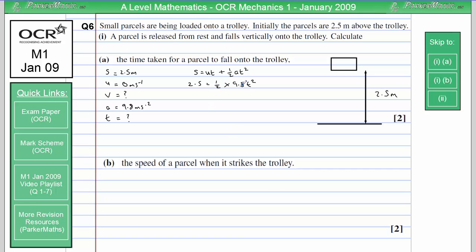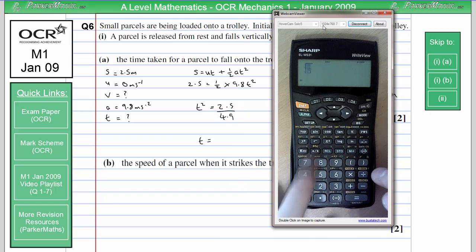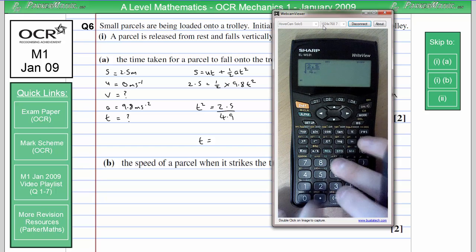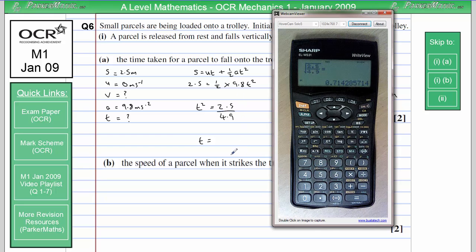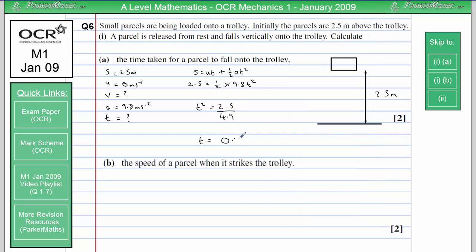Well, a half times 9.8 is 4.9. So to get T squared, we need to do 2.5 divided by 4.9. Just a little bit of rearranging there. So to get T on its own, all we need to do is square root this. Now, I'm not going to write down the value for T squared. I'm just going to do it in one step.